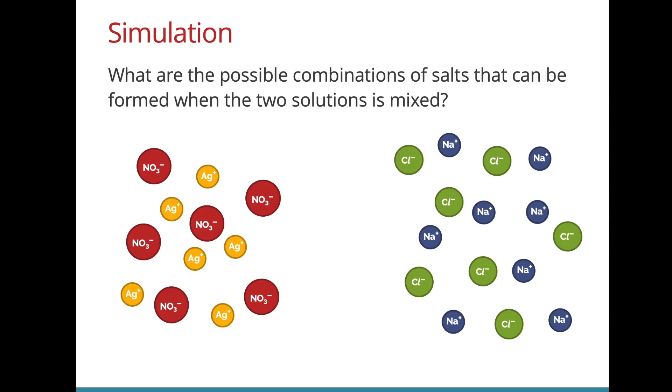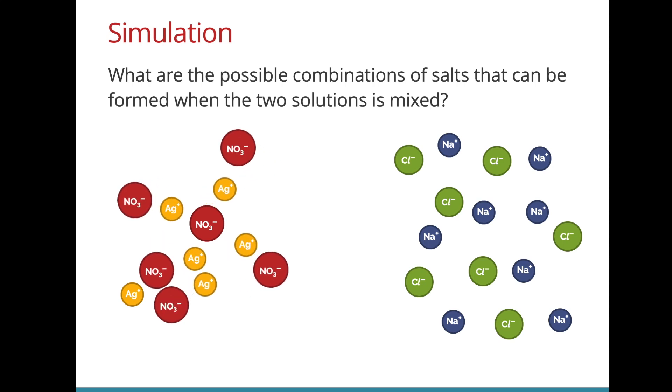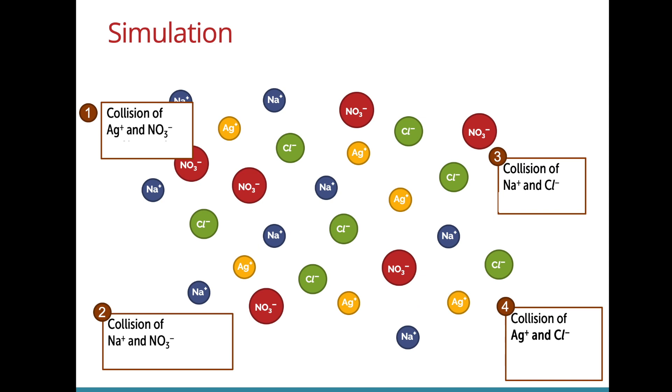Here's what's happening at the molecular level. We have the two solutions, silver nitrate and sodium chloride. Remember that our ions are constantly moving. When we mix them together, we could have collisions between silver ions and nitrate ions, sodium ions and nitrate ions, sodium ions and chloride ions. These three collisions do not result in any reaction.